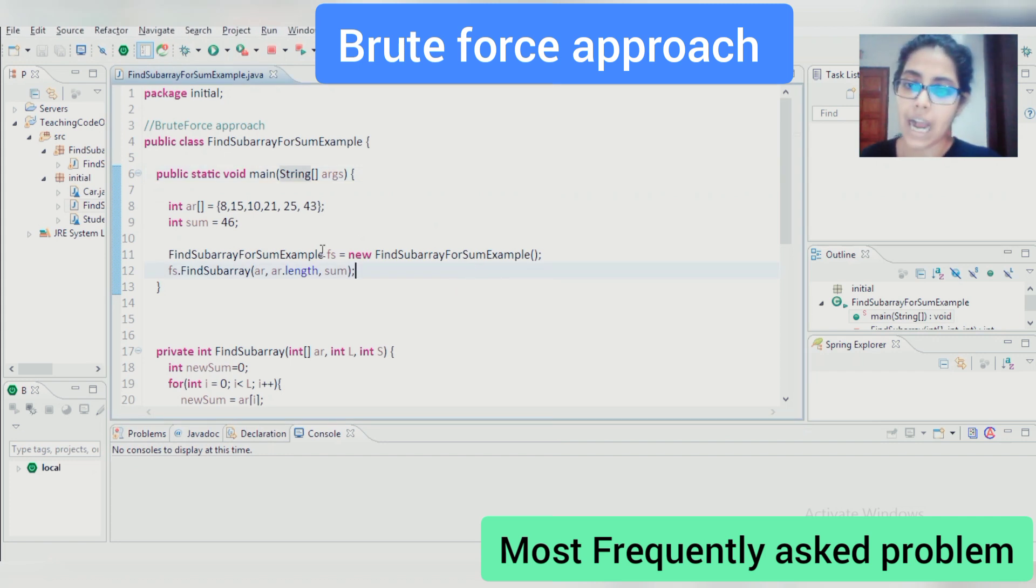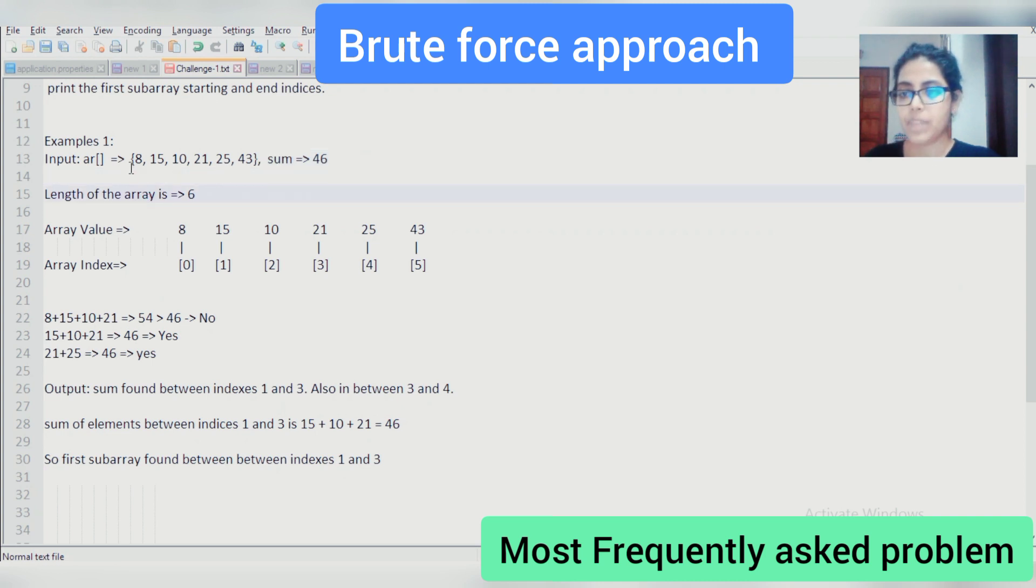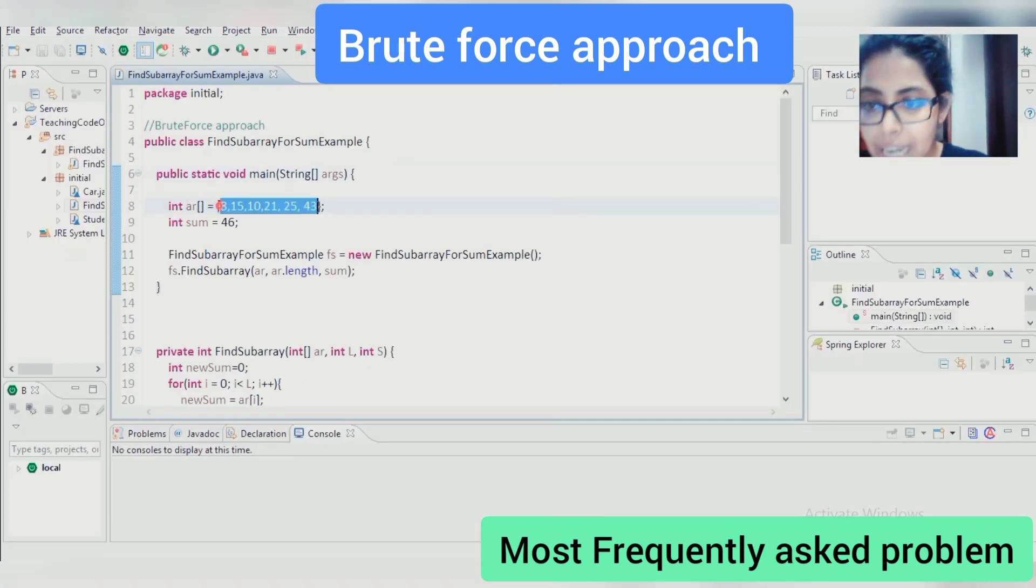Here, I have written the code by keeping brute force approach in mind first. Let's understand it line by line. As per the given question, we will be given this array and that's what we have defined here, which is int array equals to 8, 15, 10, 21, 25, 43. By writing this line, we are defining one array of integer type.